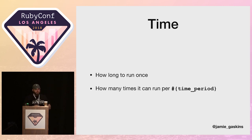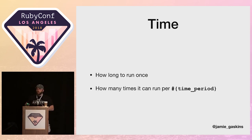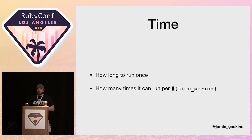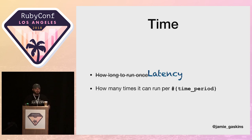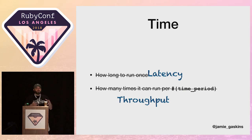But how do we distinguish between these two concepts when we use such a loaded term like 'performance' all the time? Saying 'it's faster if we do it this way' doesn't actually communicate what you mean. Half the people you're talking to will choose one of two definitions — how long it takes to run once, or how many times it can run in a given time period. So when we discuss how long it takes to do something once, we can use the word 'latency.' And when we discuss how many times you can do something in a given time period, we can call that 'throughput.' This gives us vocabulary to be more concrete about this nebulous term of performance.